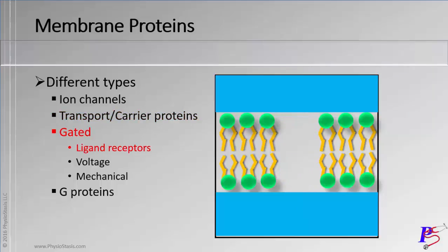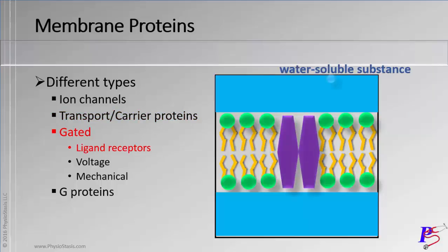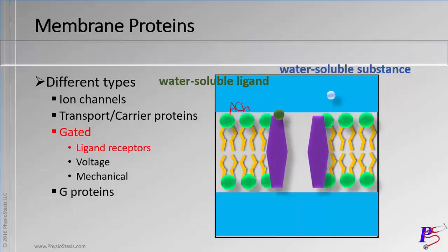You also have gated channels. One type of gated channels are ligand-gated channels. An example of a ligand could be acetylcholine — it comes, binds to the gate like a key, opens it, and for example that blue solute there could have been sodium rushing through. These are important in action potentials, which we'll also talk about in this chapter.